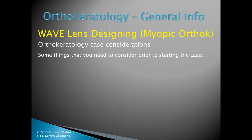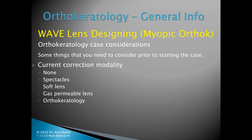For the case you're going to take on, consider these things before you start. The current correction modality matters: no correction, spectacles only, soft lenses plus spectacles, gas perm, or current Ortho-K — in that order, increasingly more difficult. Prescription is not the thing that determines whether a case is difficult or easy. Topographical symmetry is actually much more important. We also want to look at elevation distribution, corneal size — large diameter corneas tend to be very challenging — corneal irregularities, and pupil size.